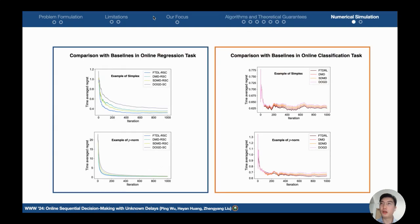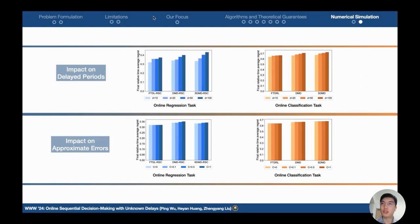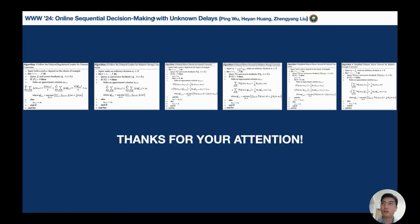In the numerical simulations, the results show that our algorithms outperform the baseline in different settings, and they can perform better with smaller delayed periods and approximation errors. Our research addresses the challenge of online sequential decision making with unknown delays. Thanks for your attention.